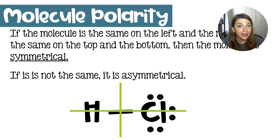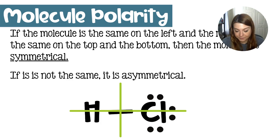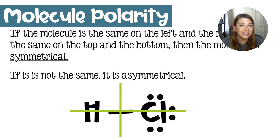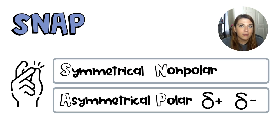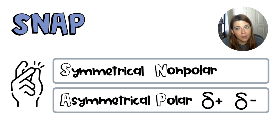We can do the same thing for really any molecule that we can draw a picture of, especially if we can get a two-dimensional picture to look like a three-dimensional molecule. We can determine if a molecule is lopsided using what I like to call SNAP. SNAP stands for symmetrical, nonpolar, asymmetrical, polar. If we have a symmetrical molecule, then we can take a pretty good guess that it's going to be nonpolar. If the molecule is asymmetrical, then we can assume it is polar — there's going to be a negative region and a positive region, and we'd be able to put partial charges on our drawings.